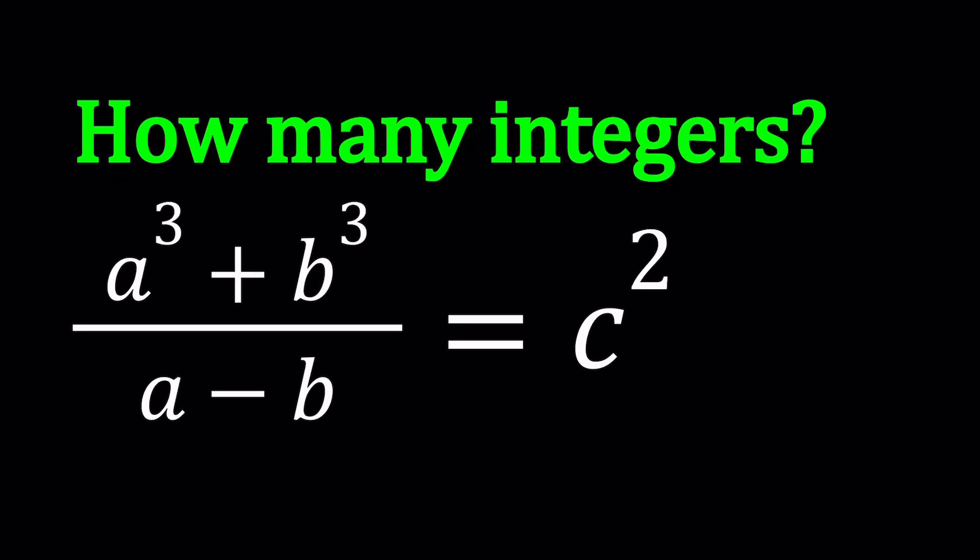Hello, everyone. In this video, we're going to be solving a Diophantine equation. We have a cubed plus b cubed divided by a minus b, and that is equal to c squared, and a, b, c are all integers.